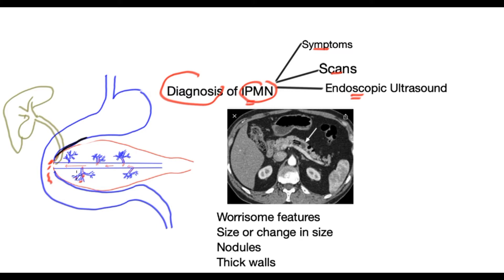In IPMN, the wall of the tube — either in the side branch, the main duct, or sometimes both — gets replaced by abnormal tissue that does not function well and produces mucin, which is thick, sticky, and gloopy, causing obstruction of these tubes. When that obstruction happens in the side tube, you can see that as a small cyst appearing. When it happens in the main tube, the main tube is affected in part or in its whole length, and over time the pancreas function is affected.